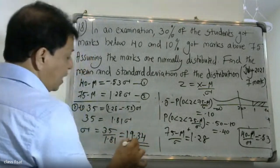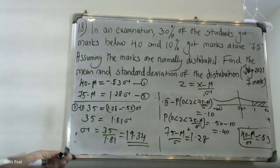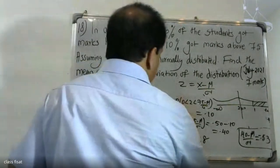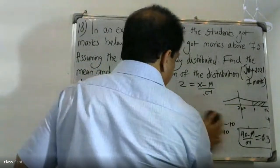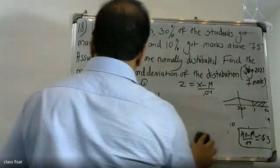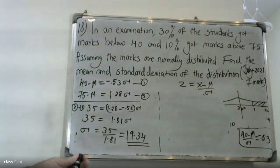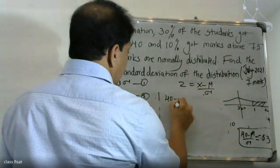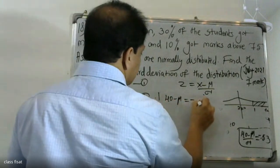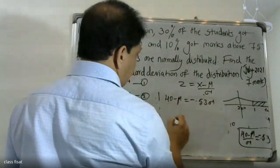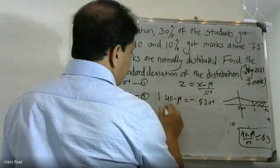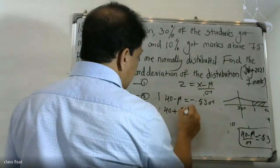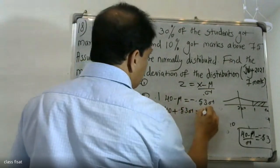So the standard deviation sigma is 19.34. Now to find the mean, substituting into the first equation: 40 minus mu equals minus 0.53 times sigma. Therefore, 40 plus 0.53 times sigma equals the mean.